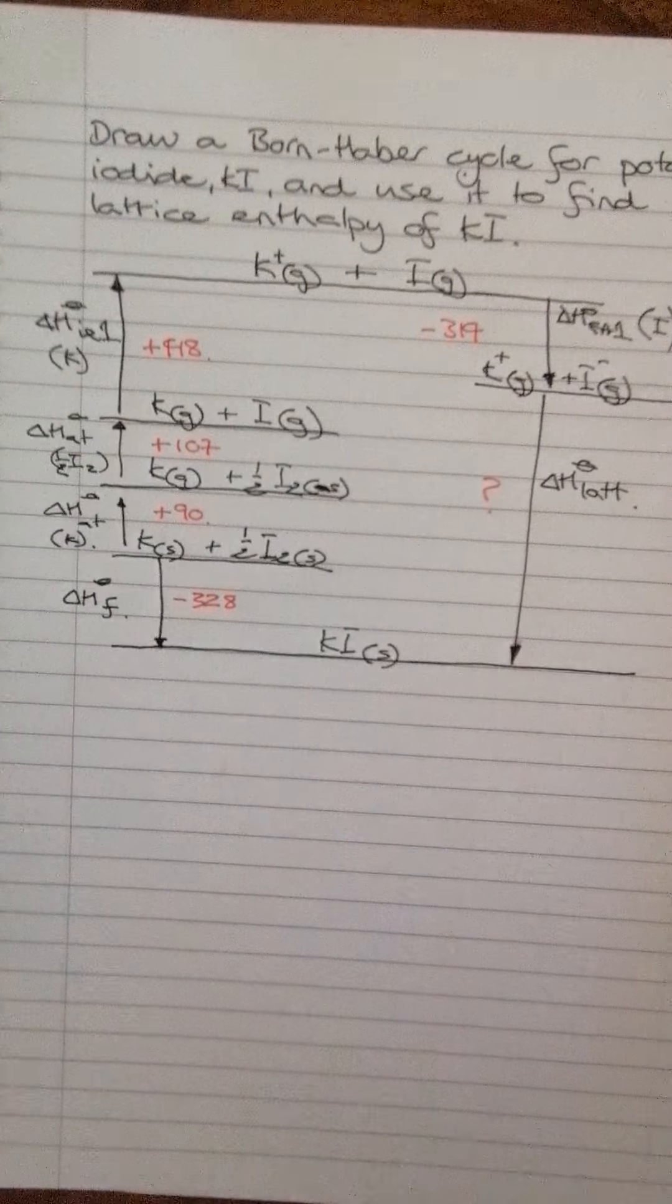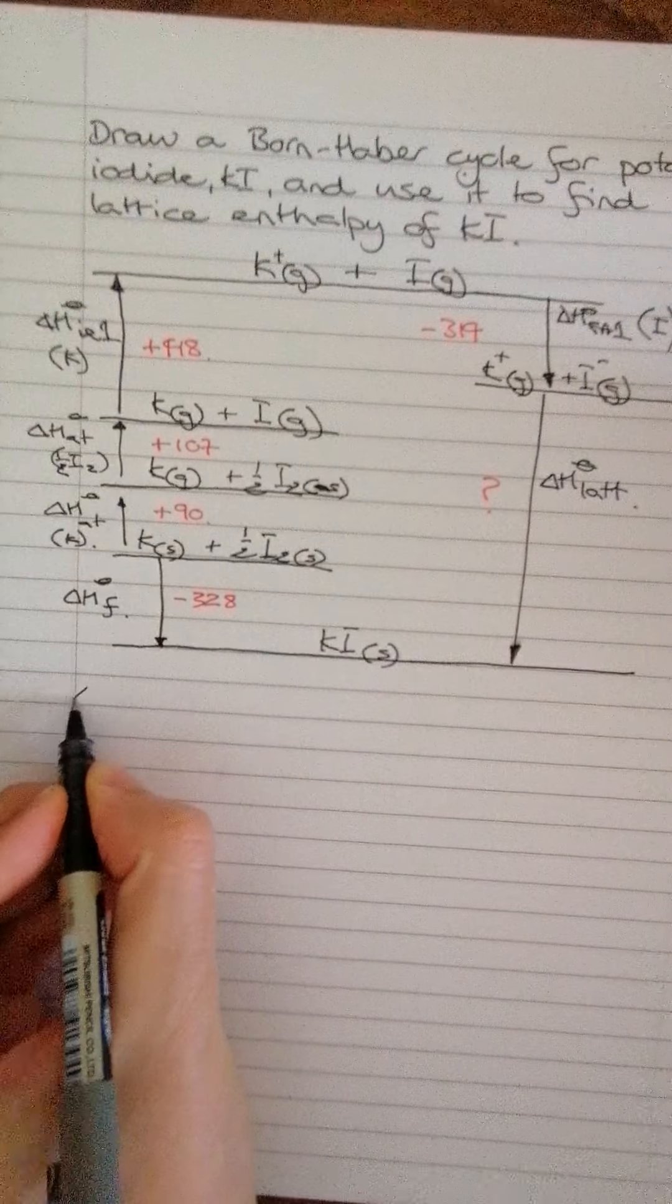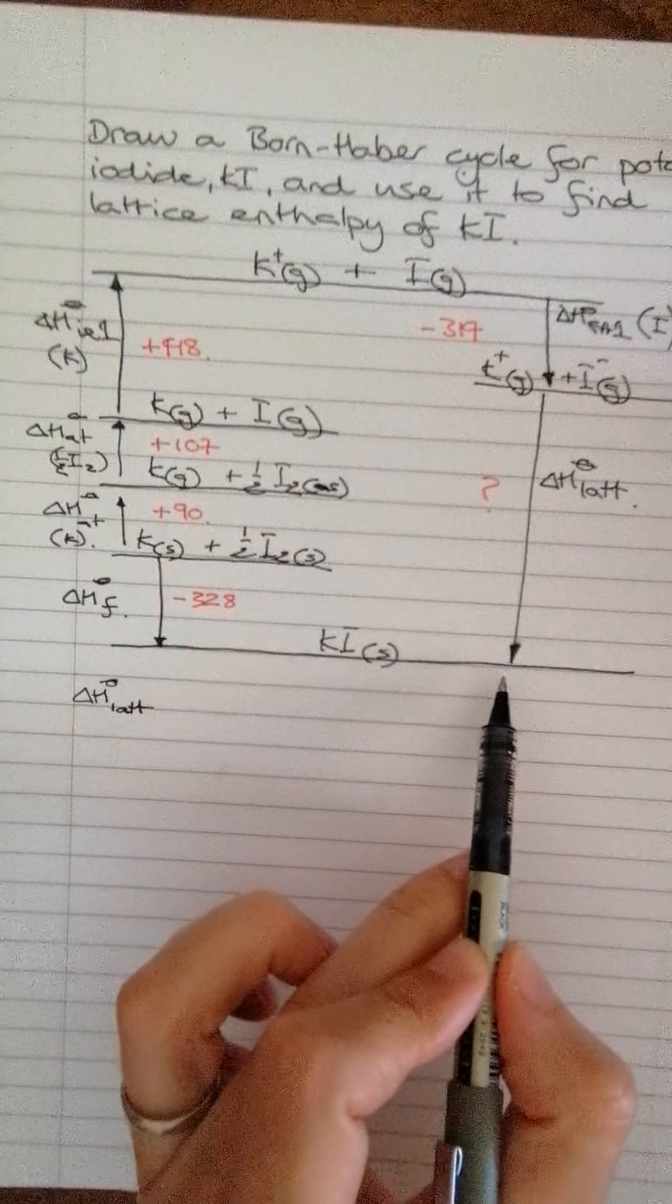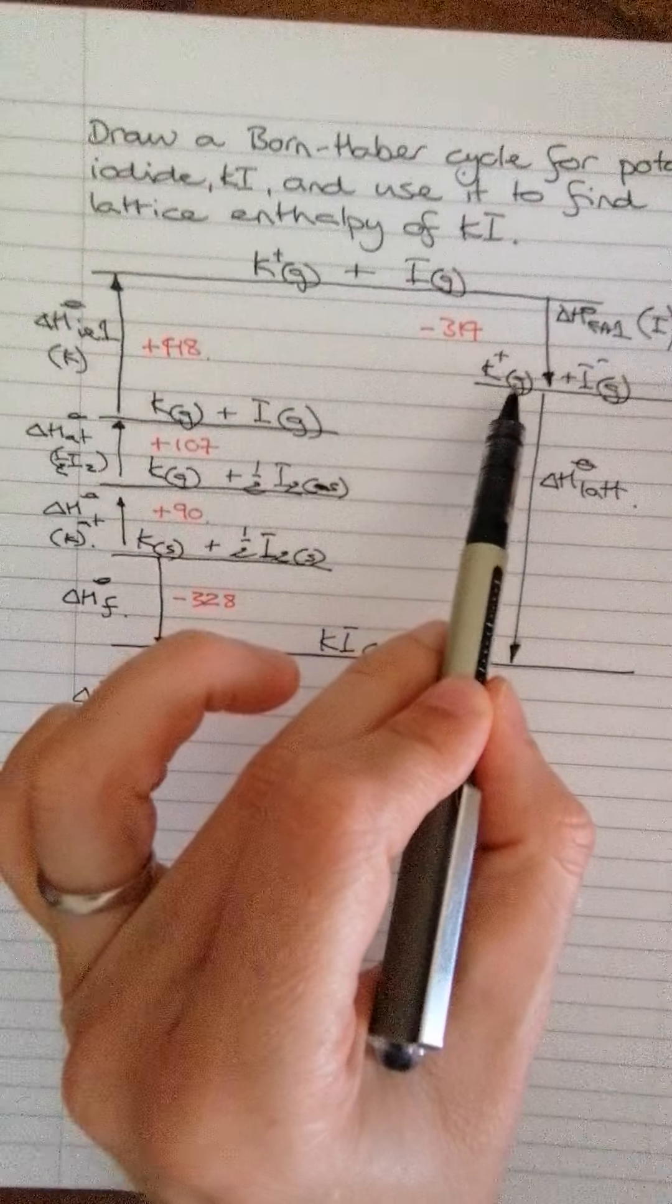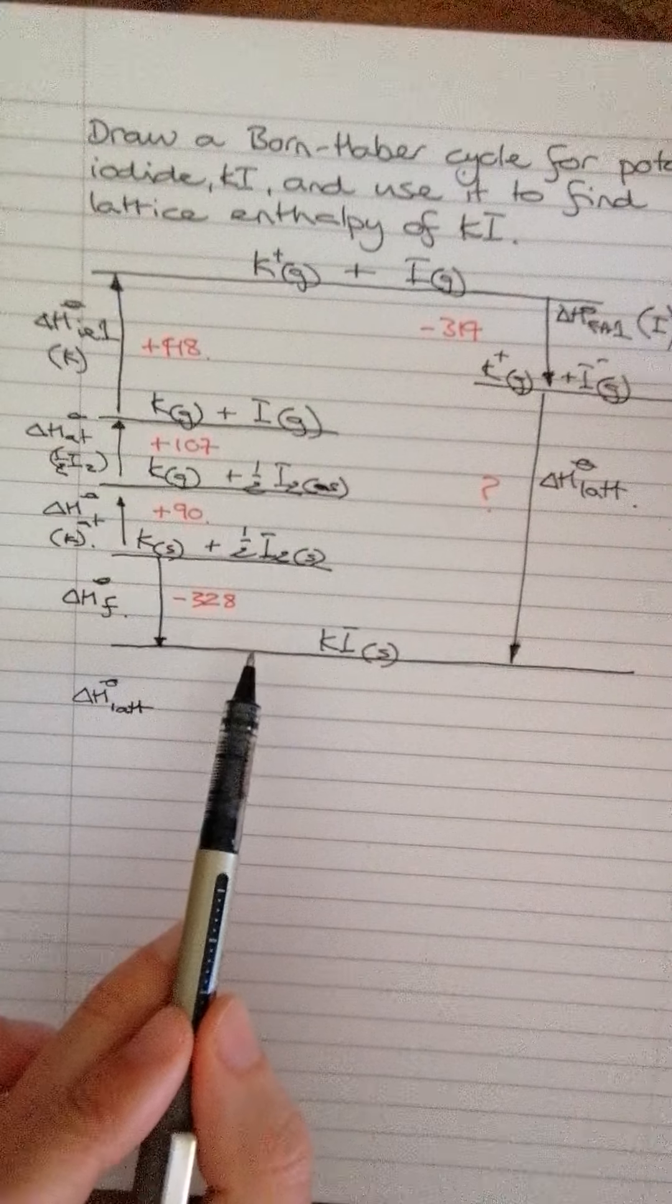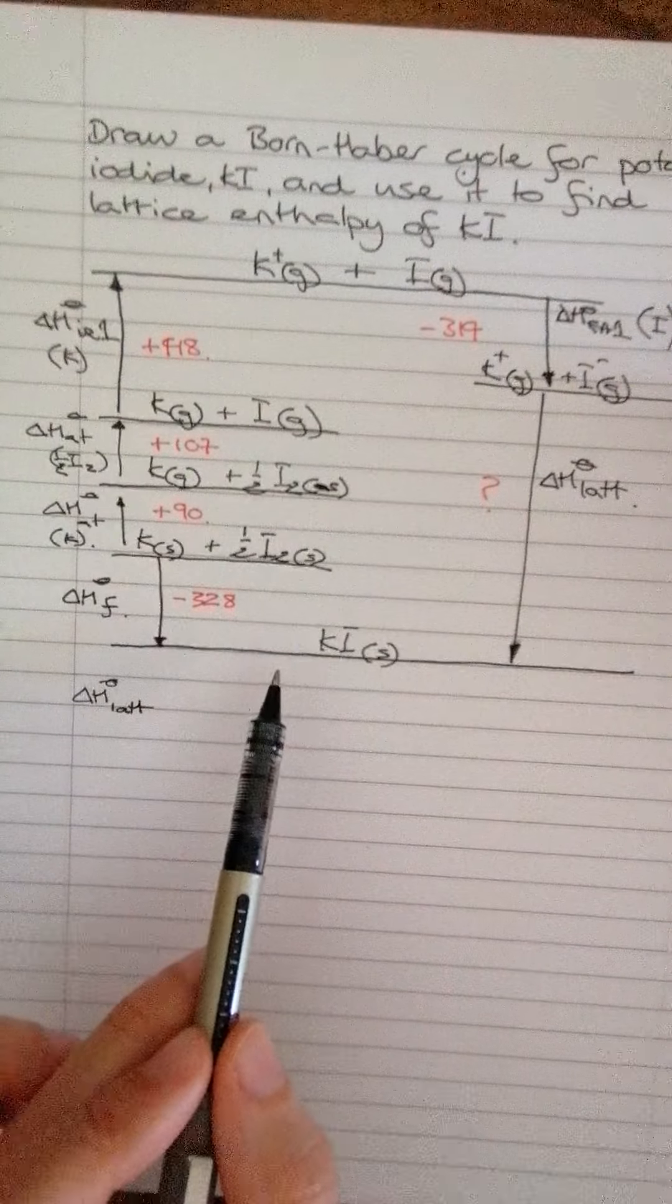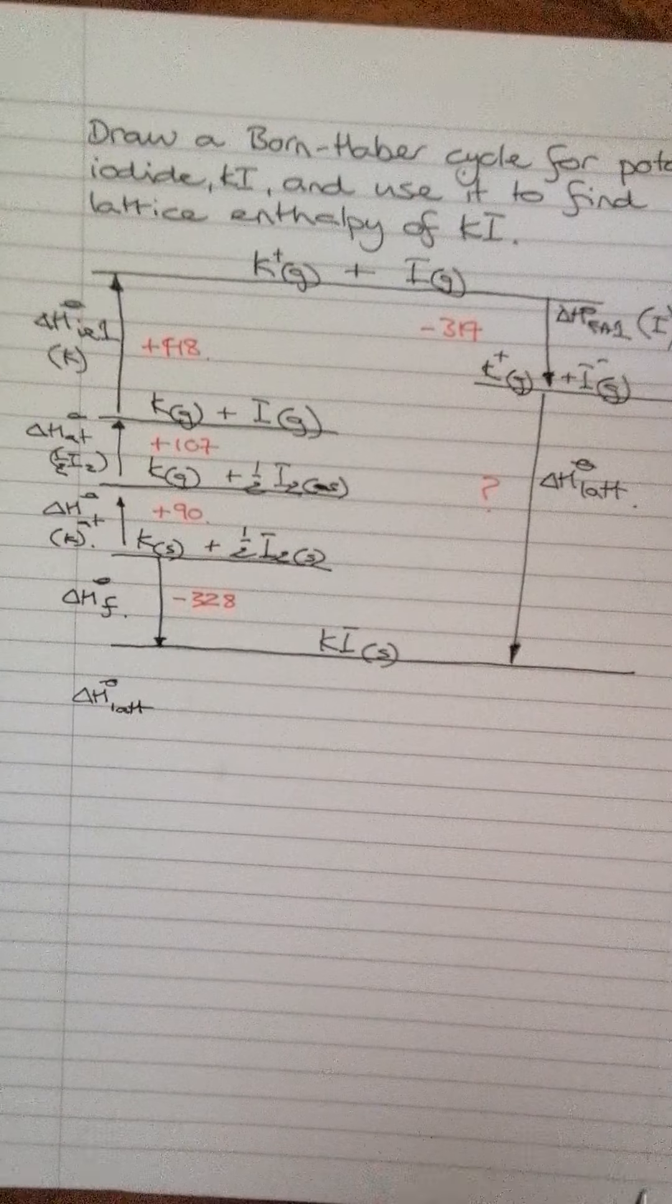So we've got all of the numbers in there. This should make the calculation relatively easy. So we've got delta H lat. That's what we want to find. So that's the energy change from here to here. That means that if I go, the energy change from here to here is exactly the same as going all the way this way around the cycle. Okay. That's what Hess's law says. It's conservation of energy. Yeah. The enthalpy change is exactly the same no matter which route we take.